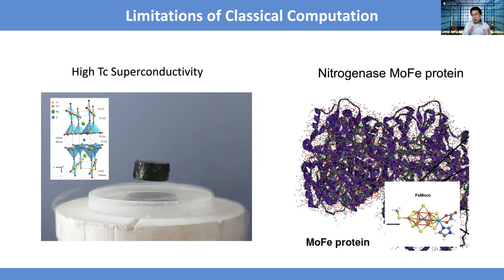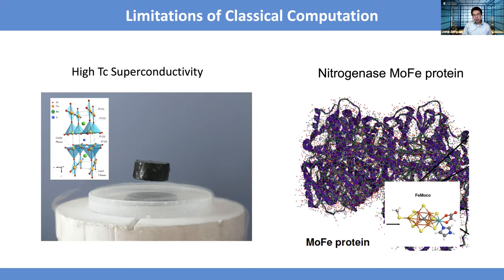It's not that doubling the spins doubles the complexity — doubling the spins takes you from two-to-the-fifty to two-to-the-hundred. That's astronomical growth. Current supercomputers can probably simulate up to about 50 qubits. Above that, it's just a waste of electricity. Another reason is that we cannot do a simple classical approximation — it's not Newtonian mechanics, it's really quantum mechanics. If you want to use quantum mechanics to simulate these systems, you encounter this huge overhead just in storing the state.